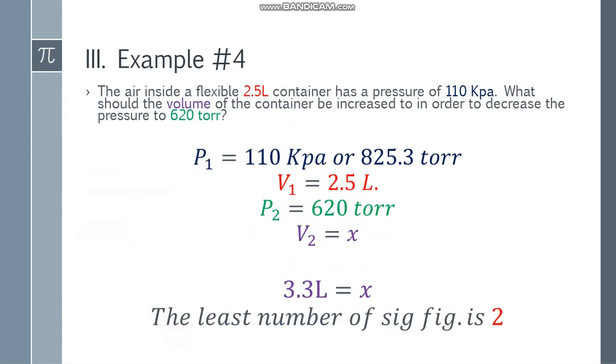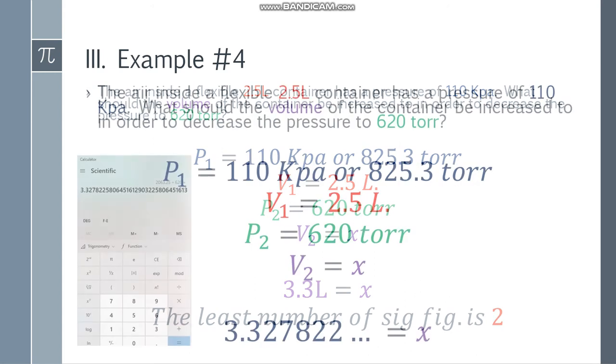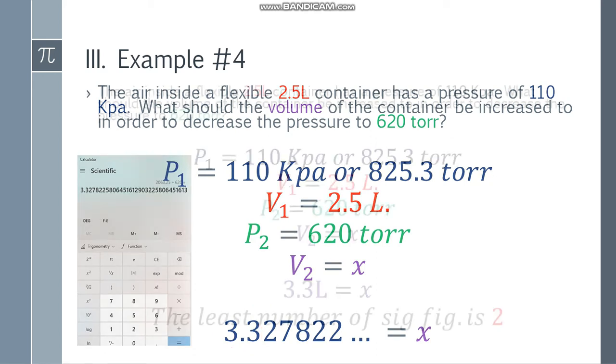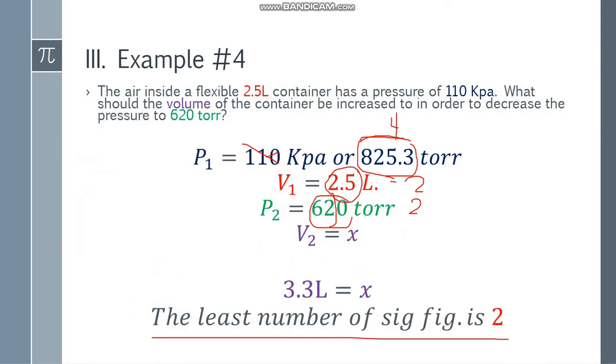The final answer will be 3.3 liters. Why? The least number of significant figures is 2. Check: 825.3 has 4 significant figures, 2.5 has two, and 620 has two. So we take only two, and the next number is 2, so we round down to 3.3 liters.